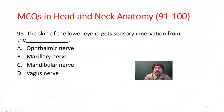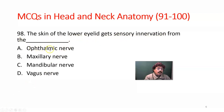Question number 98. The skin of the lower eyelid gets sensory innervation from where? The choices are ophthalmic nerve, maxillary nerve, mandibular nerve, and vagus nerve. The answer is the maxillary nerve.